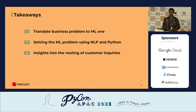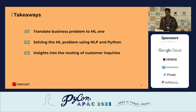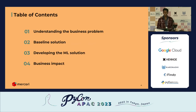In this talk, I'm going to cover the problem that my team and I worked on. You're going to see how we found our business problem and then how we translated it into a machine learning problem. After translating into a machine learning problem, we'll see how we solved it using NLP and Python. Since this business problem relates to customer inquiries, you will learn about a couple of algorithms for routing customer inquiries to CS agents.